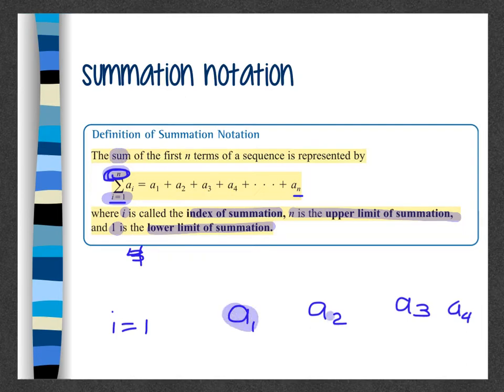So you're going to find what a sub 1 is, a sub 2 is, a sub 3, a sub 4, and so on and so forth. And you're going to add them all together at the end to get one single number.